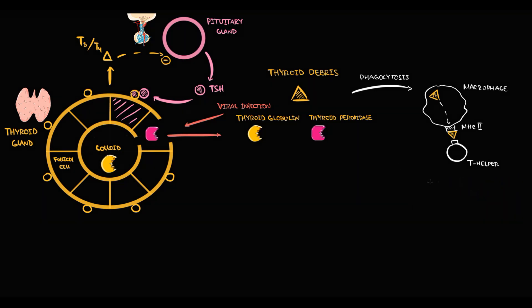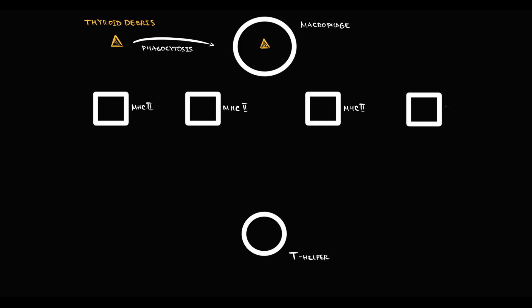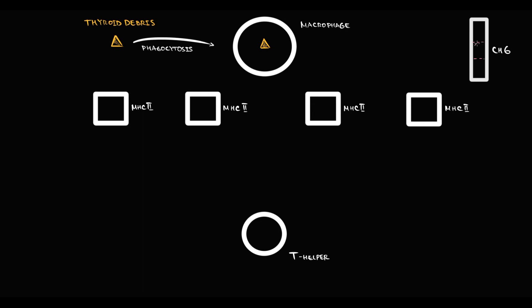But some people have MHC2 receptors produced based on HLA-DR3 and HLA-DR5 alleles, and in this case inflammation will most probably develop. To explain why, we need to understand antigen presentation. When thyroid debris is released, macrophages intake it to present to T-helpers via the MHC2 receptor. This receptor is a protein, and the genetic information encoding it is located on chromosome 6 in what we call the HLA-DR gene — which has different variations called alleles.